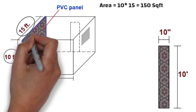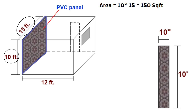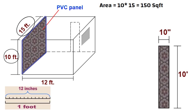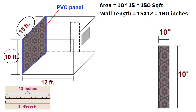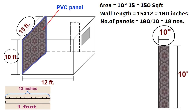The length of the wall is equal to 15 feet. We will convert this length into inches. 1 foot is equal to 12 inches, so 15 x 12 is equal to 180 inches. The width of 1 panel is 10 inches, so the number of panels is 180 divided by 10, which means 18 panels shall be required.